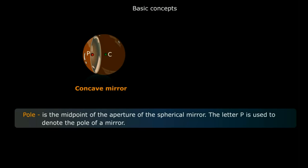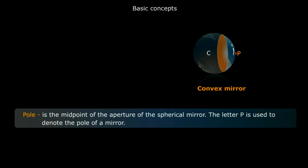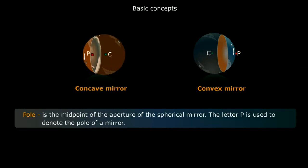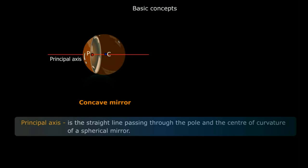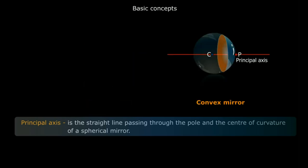Now, pole. The pole is the midpoint of the aperture of the spherical mirror. The letter P is used to denote the pole of a mirror — observe P in both the mirrors. Now, principal axis. The principal axis is the straight line passing through the pole and the center of curvature of a spherical mirror. The line passing through P and C is known as the principal axis, and this is the same for both concave and convex mirrors.